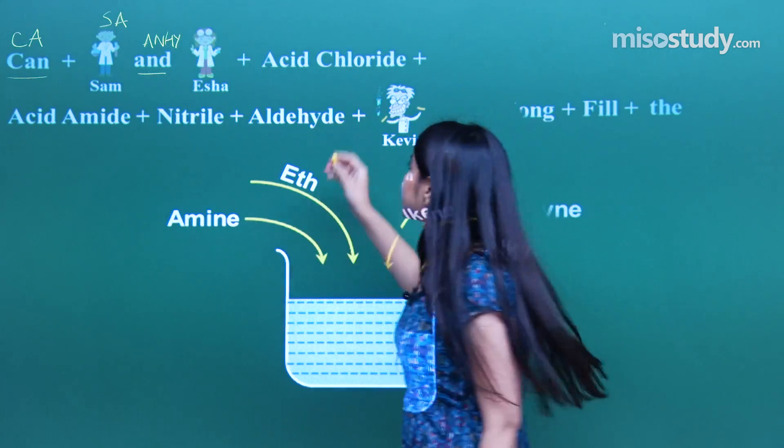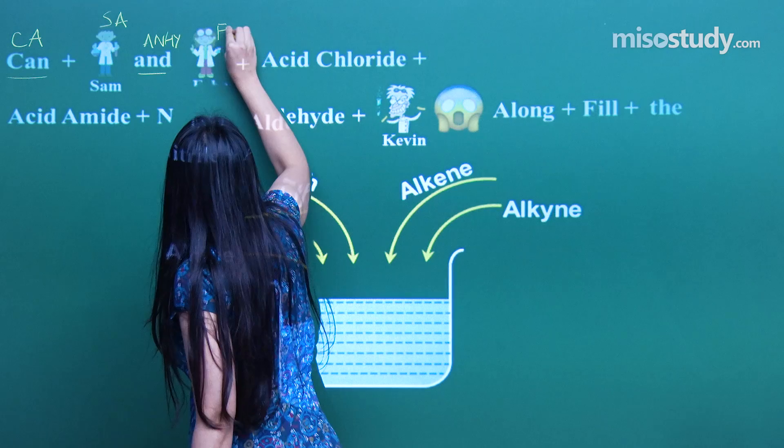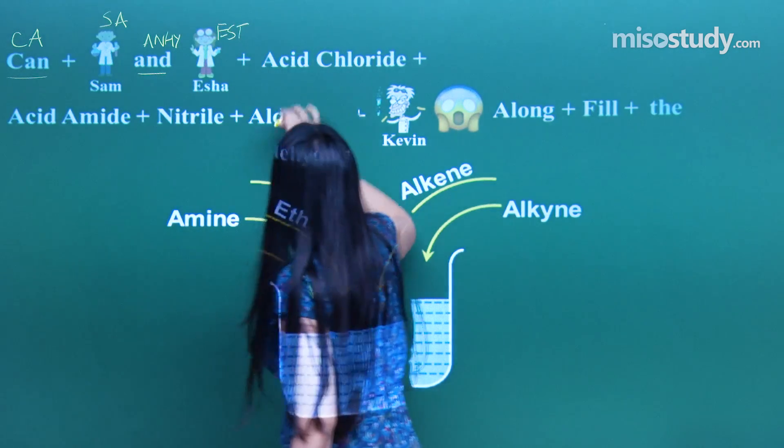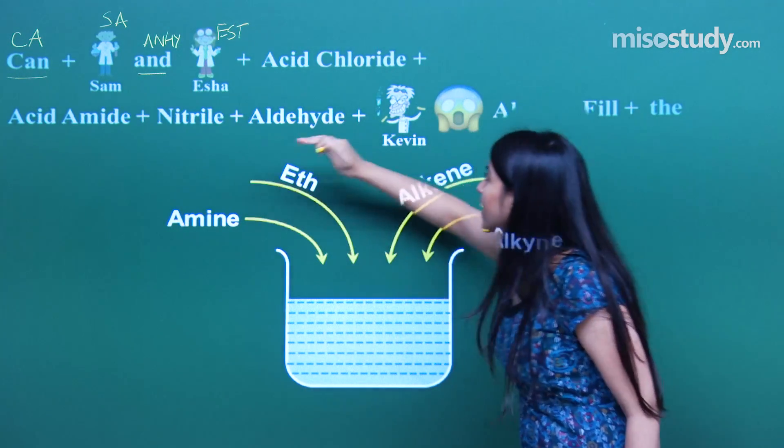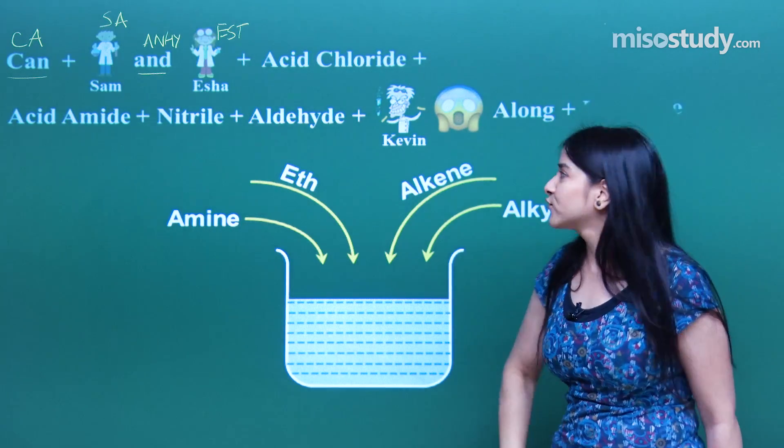Whereas acid chloride, acid amide, nitrile, aldehyde is just a part of the rap.